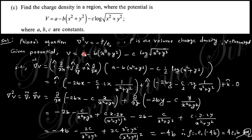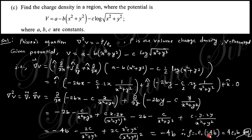V is given. Take the gradient: the i-cap component (del/del x) gives minus 2Bx; the j-cap component gives the y term; the k-cap component is zero. Taking the divergence (dot product), you get del/del x of the x-term plus del/del y of the y-term. The terms cancel, leaving only minus 4B. So rho equals minus epsilon naught times (minus 4B), giving rho equals 4 epsilon B.